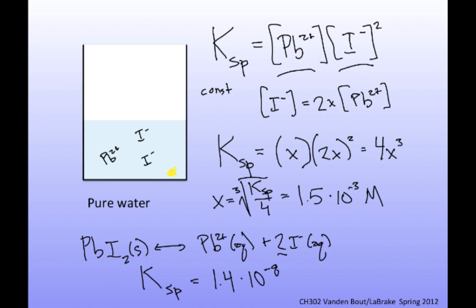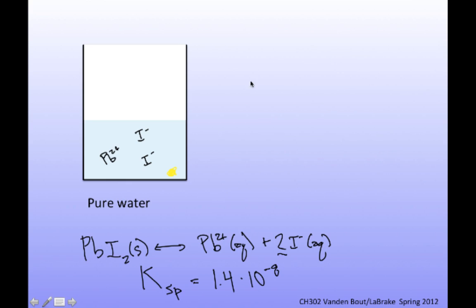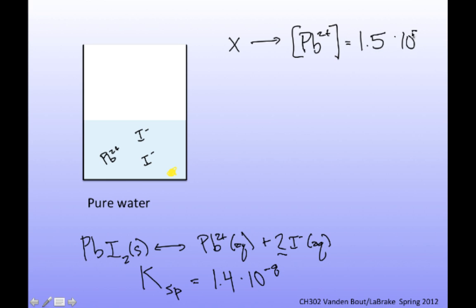X was defined as equal to the lead ion concentration, so the lead ion concentration is 1.5 times 10 to the minus 3 molar. The iodide concentration in this situation is twice that — because for every lead ion, two iodide ions dissolved — so it's 3 times 10 to the minus 3 molar.